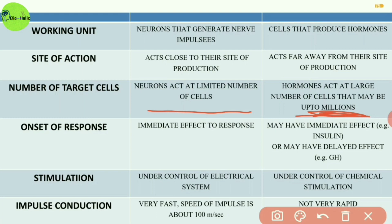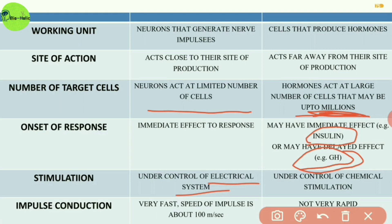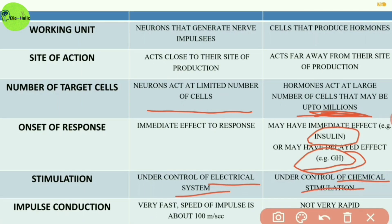Neural coordination shows an immediate effect in response, but in chemical coordination, some hormones show immediate effects like insulin, while some hormones may have a delayed effect — for example, the effect of growth hormone. The stimulation of neural coordination is under the control of the electrical system, but stimulation of chemical coordination is under the control of chemical stimulation.